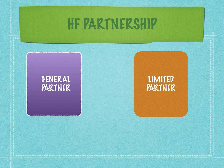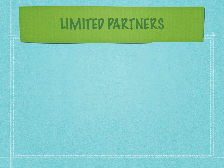In a hedge fund structure, typically there would be one general partner and multiple limited partners. There could be between four to five limited partners — I have seen some hedge fund structures which have even nine limited partners. The more the number of limited partners, the more complex the structure, and therefore there would be a lot more settlements and allocations. Sometimes there could be only a general partner with no limited partners.